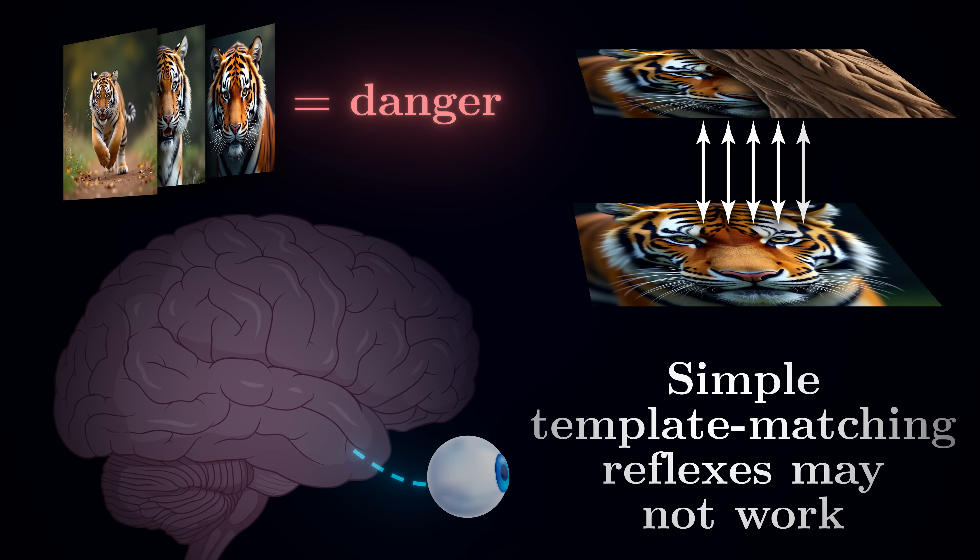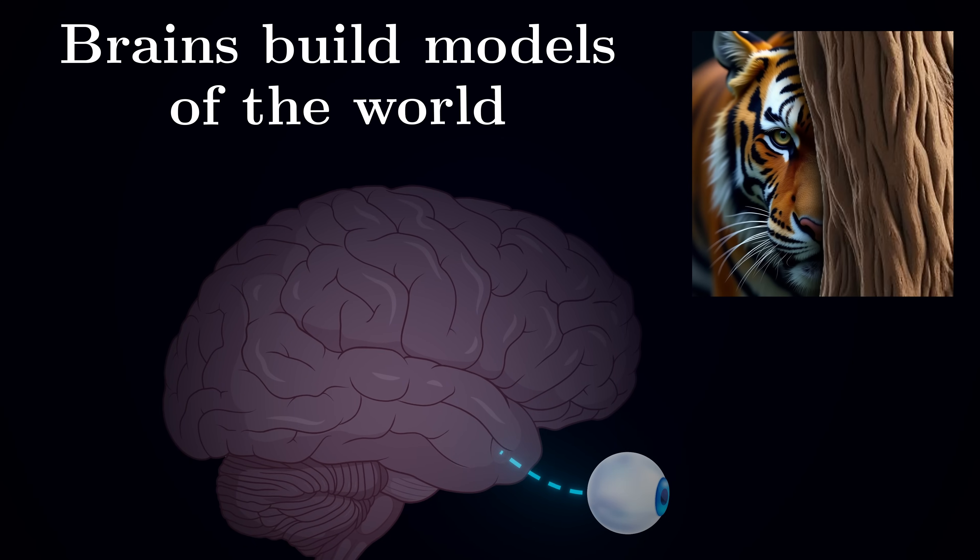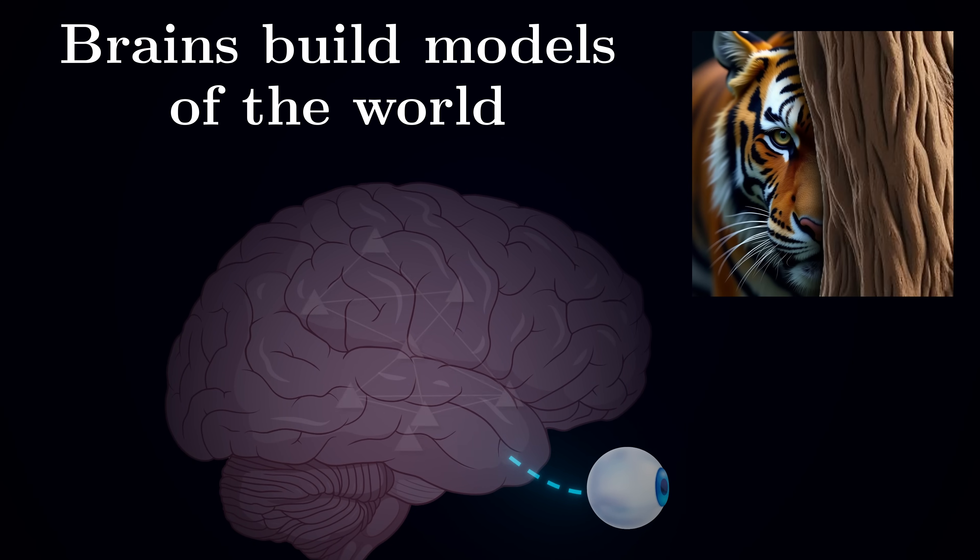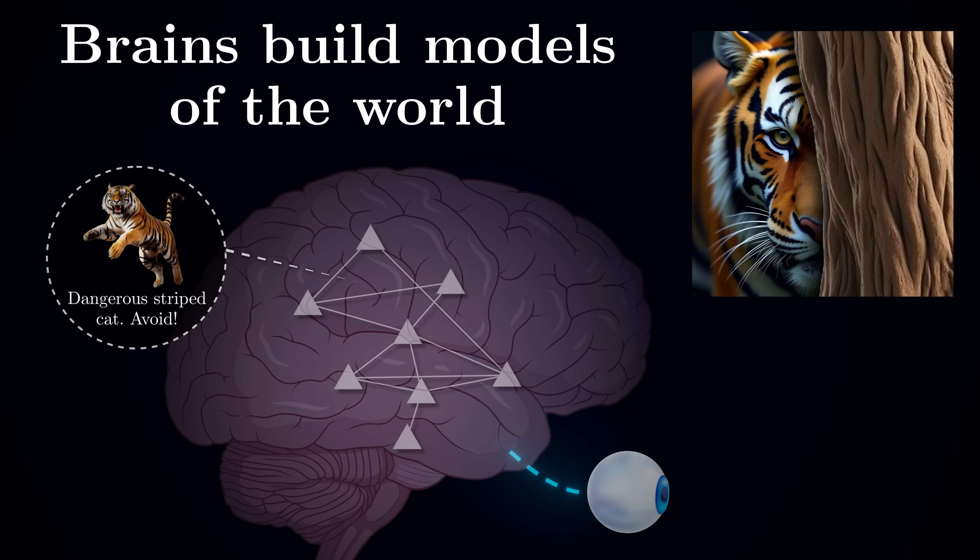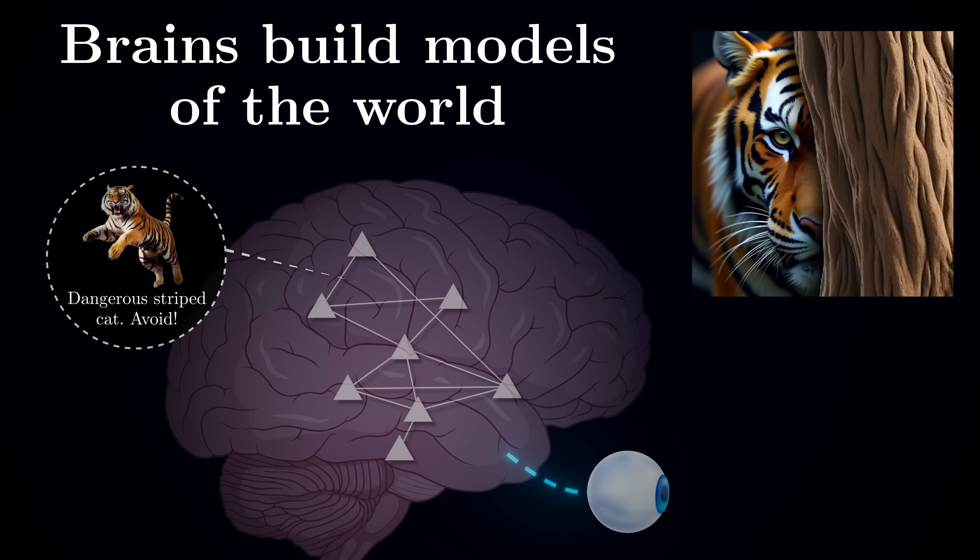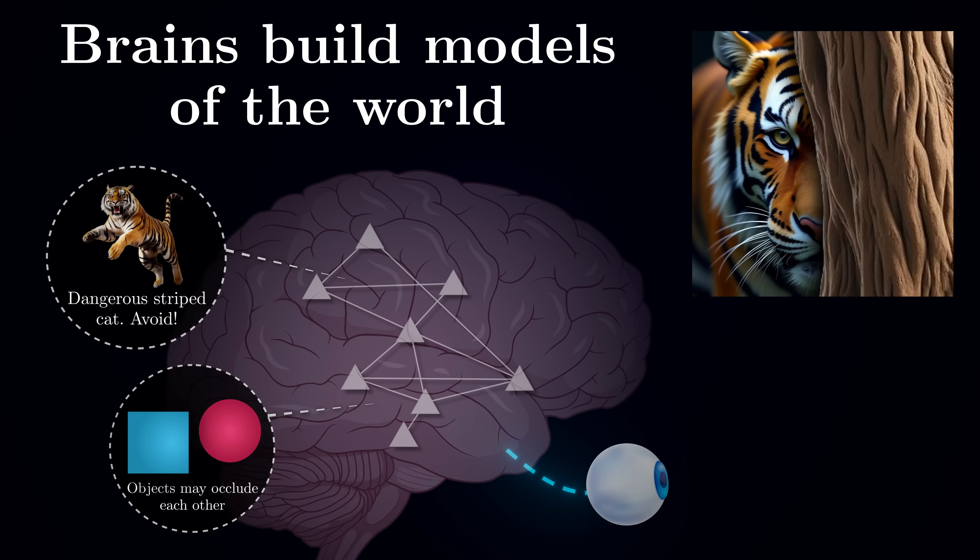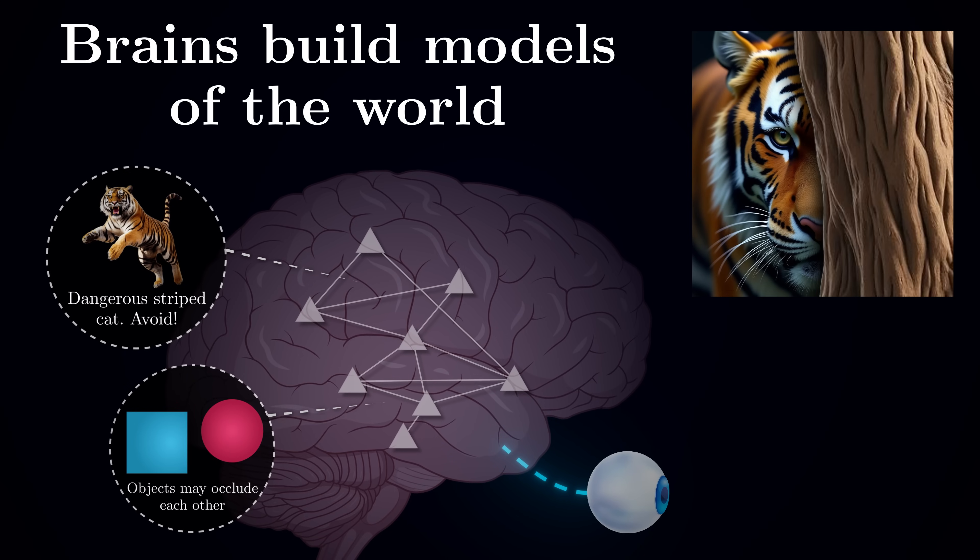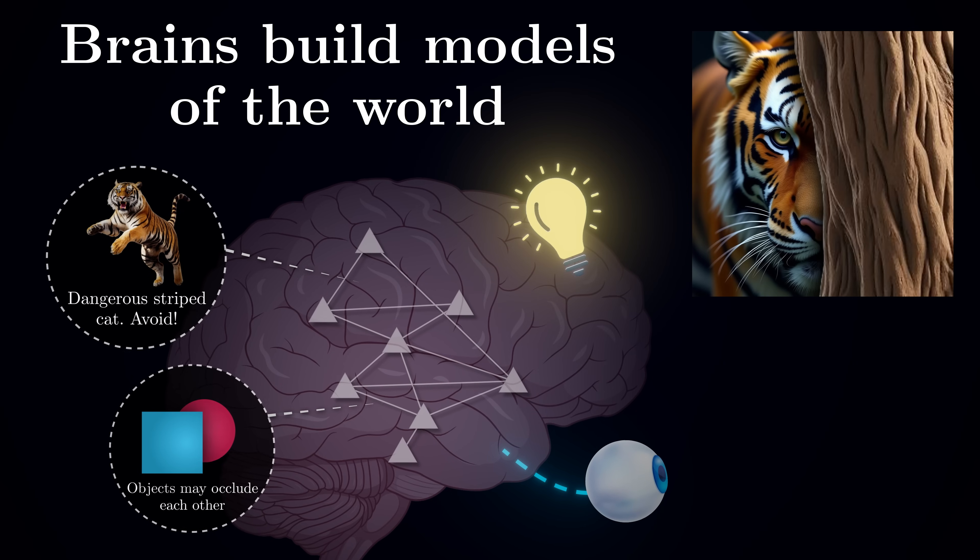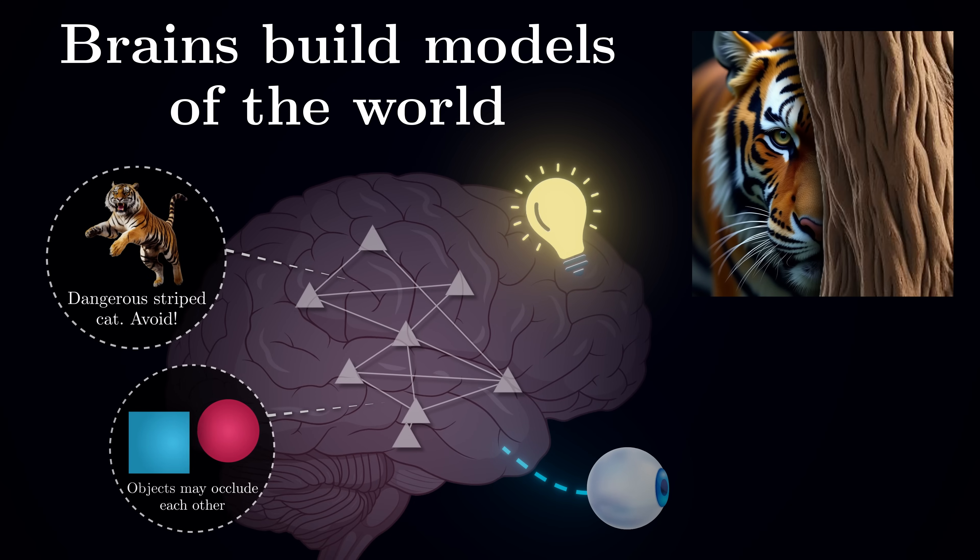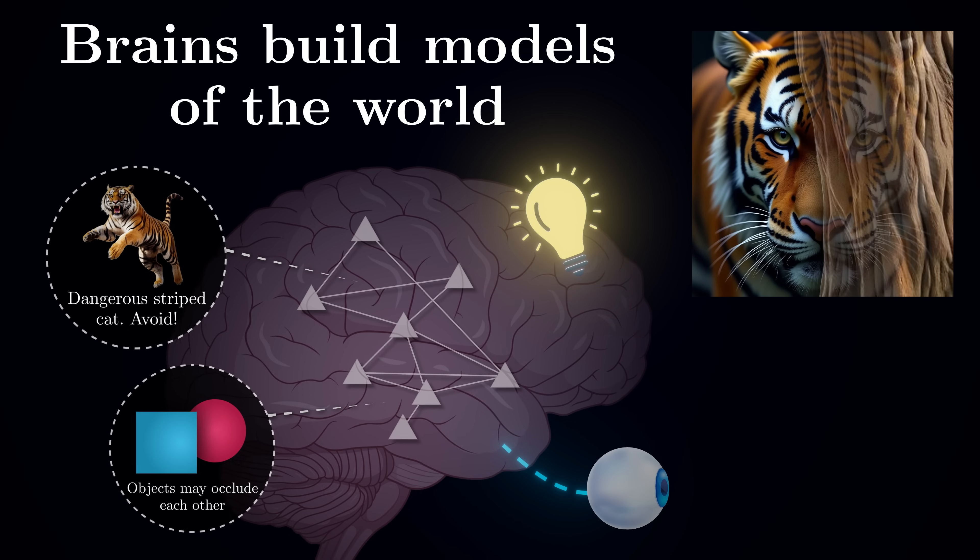If you had a primitive nervous system that determined whether something is a tiger or not by pure pattern matching, the similarity might be below the threshold, and you will get eaten. This is where brains come in. They evolved not just as reaction machines, but as sophisticated model builders that try to explain sensory inputs by inferring their hidden causes. In this case, your brain might have an internal model of what a tiger is, how it looks like, and what will happen if you get caught.